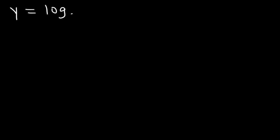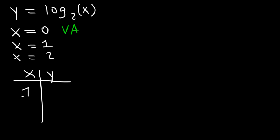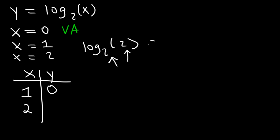So now let's work on some examples. Let's graph log base 2 of x. The first thing you want to do is set x equal to three things: set it equal to 0 — this is going to be the vertical asymptote — then set it equal to 1, and also whatever the base is. The base is 2, so set it equal to 2. Make a table with the two points 1 and 2. Log of 1 is always 0. Log base 2 of 2 — if these two numbers are the same — is going to be equal to 1.